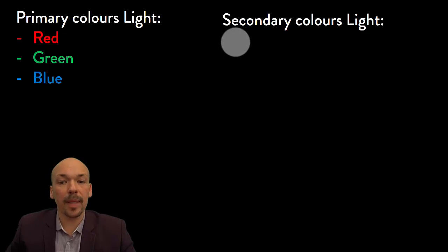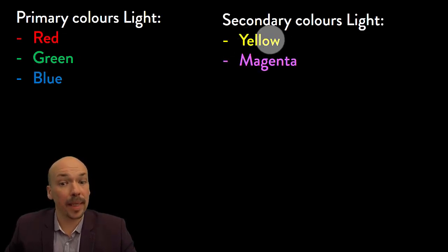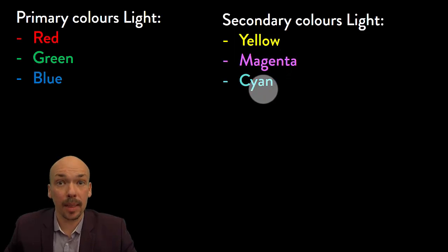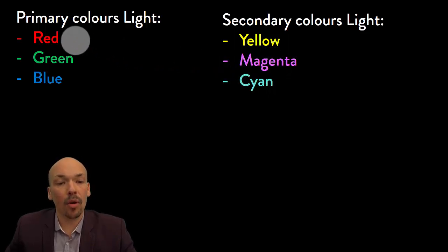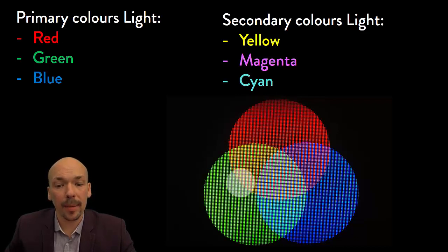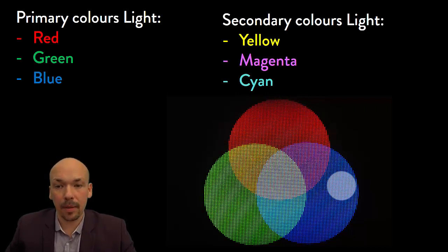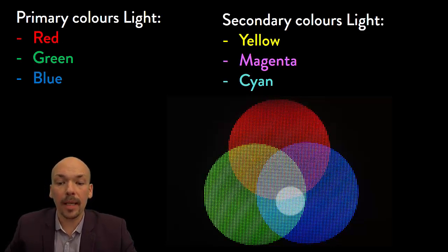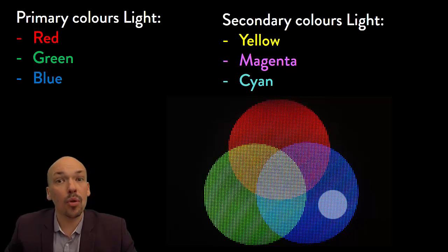If you start combining them, then secondary colors of light will appear. You can make yellow, you can make magenta, and you can make cyan from these three colors. So if you have red and green and you combine them, then you will actually make yellow. If you have red and blue and you combine them, then you will make magenta. And if you have blue and green, then you will make cyan.